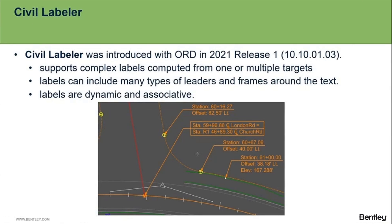We need to talk about the CV Labeler, which in terms of time frame is the last topic introduced in the drawing production workflow, introduced in the 2021 Release 1. It's a really useful and powerful command that supports complex labels computed from one or multiple targets, so you can select just one or multiple elements to annotate.